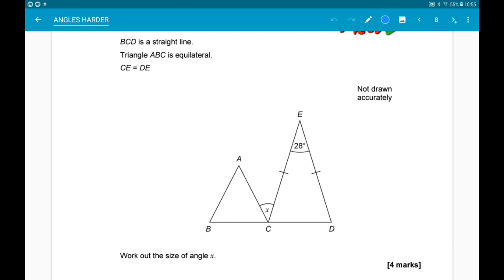So let's start. So here BCD is a straight line. Triangle ABC is equilateral. CE is equal to DE. So the right hand triangle is isosceles. Work out the size of angle x.